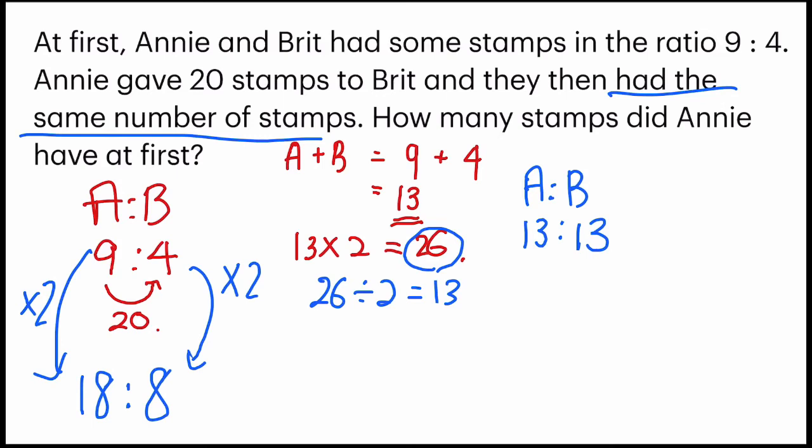And let's take a look at the change. 18 to 13 is a transfer of 5 units. And where did the 5 units go? So it goes to Brit. You can see 8 plus 5 equals to 13.